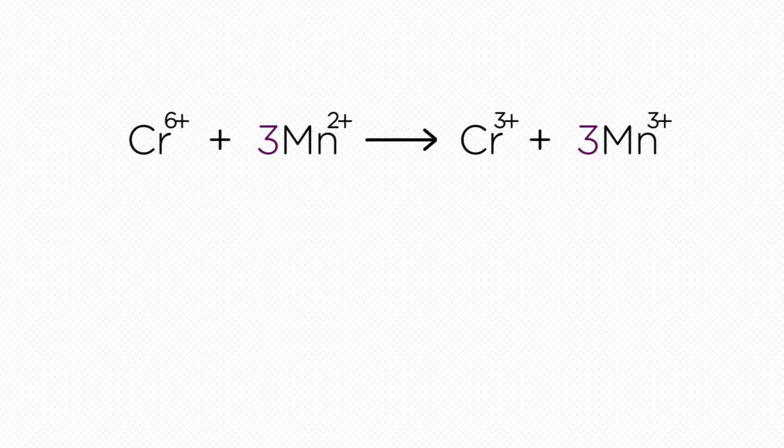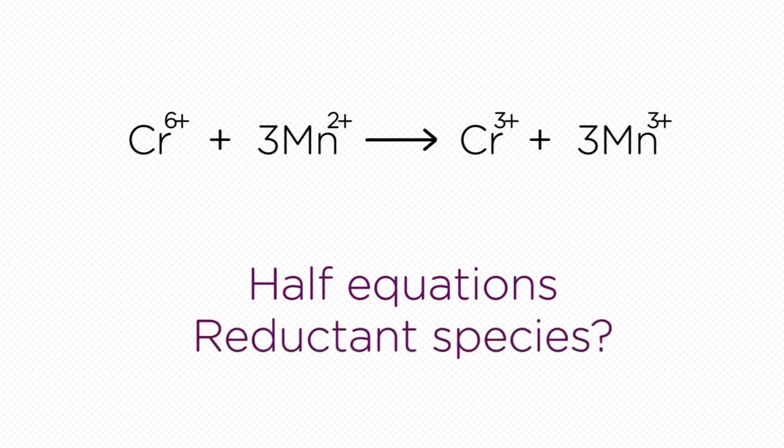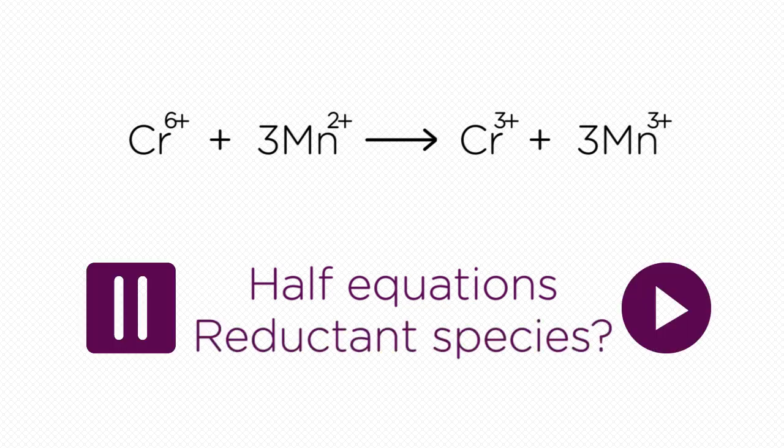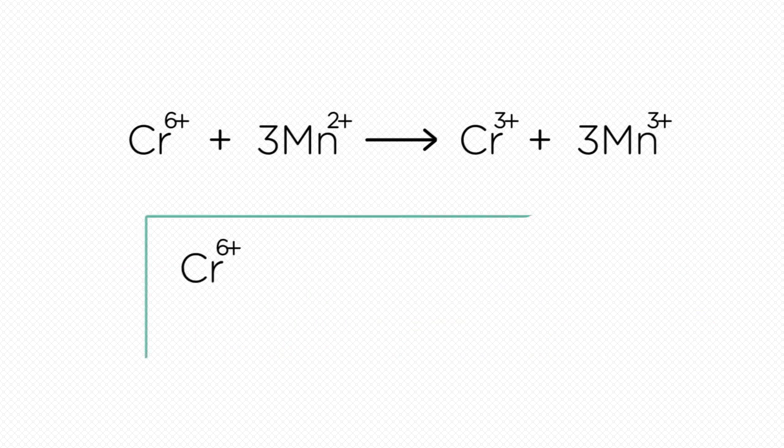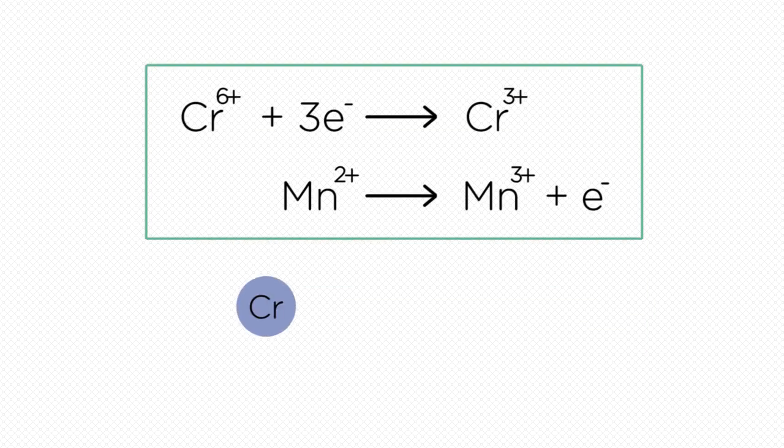This reaction can also be written as two half equations. Write down the half equations for chromium and manganese. Which species is the reductant? Pause the video again whilst you work it out. Ready? Chromium is the oxidant, so manganese is the reductant.